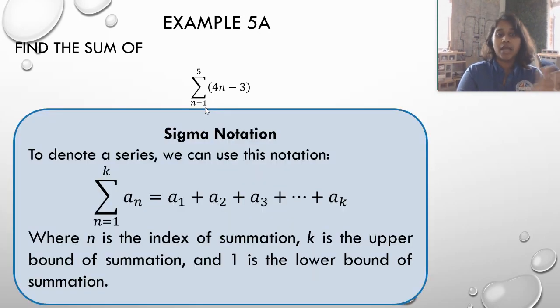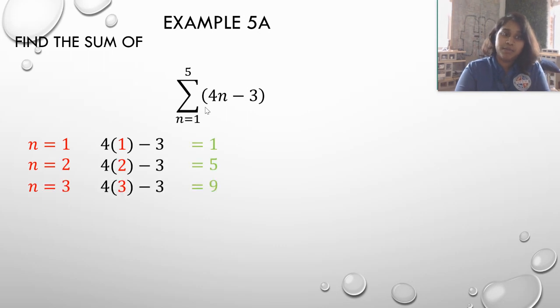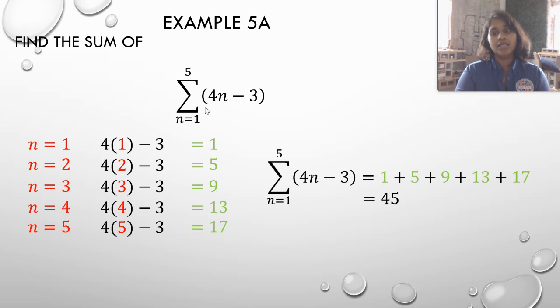So we take 4N minus 3. Formal definition: we take 4N minus 3 and we plug it in for N equals 1, 2, 3, 4, and 5. So we've got our sequence: 1, 5, 9, 13, 17. Now let's add them up to get our series, the sum. So we add them together. There's our answer. And I promise it is that simple.